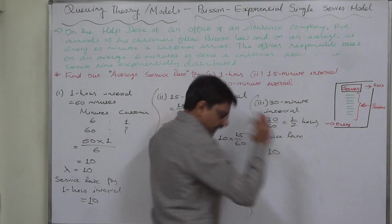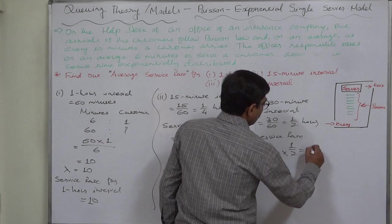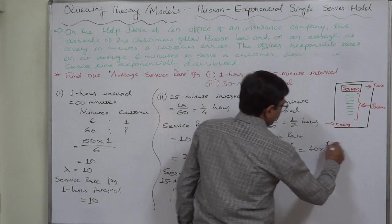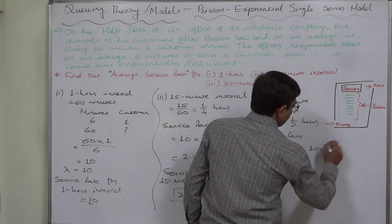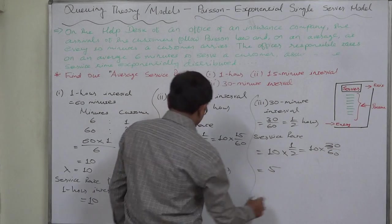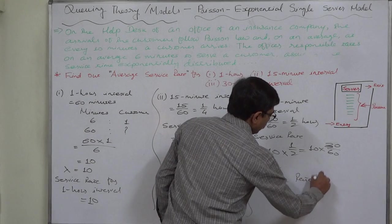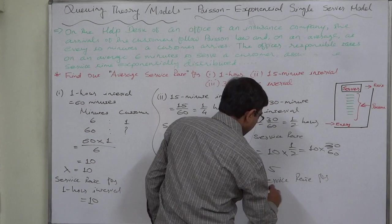Hourly rate into 30 by 60 minutes, so it comes to 5. So we can say that the service rate for 30 minute period or 30 minute interval is 5.